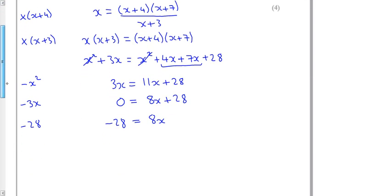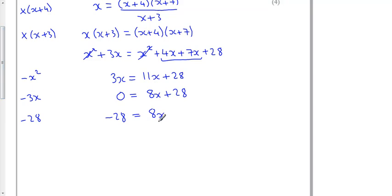And then, final step, I'm going to divide by 8. So minus 28 over 8 equals x. Or, x equals minus 3.5.